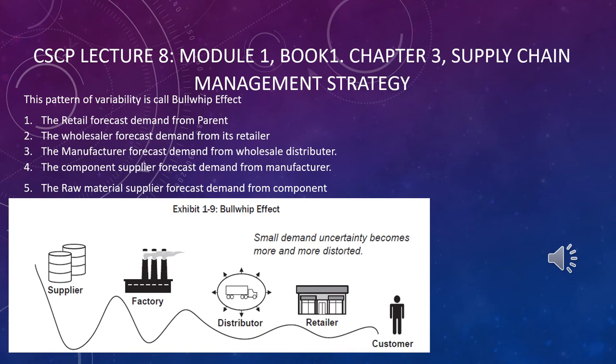So the order becomes 1,500 diapers to the distributor. The distributor, thinking there may be more demand in the market, gives an order of 2,000 diapers to the factory. The factory, estimating based on the retail demand and thinking it needs more, produces 2,500 diapers and gives orders of 2,500 diaper components to its suppliers.